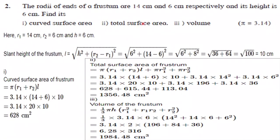Your next question is total surface area of frustum. Total surface area is curved surface area plus area of base plus area of top. So it is 3.14 into (14 plus 6) into 10. This value is already 628 plus pi R1 square plus pi R2 square.